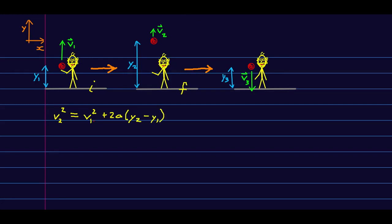And notice that because this is free fall, we know A. I've set up positive, so A is negative G. And so I can rewrite this whole thing as V2 squared equals V1 squared minus 2GY2 plus 2GY1.